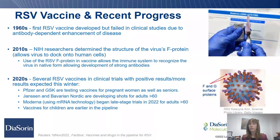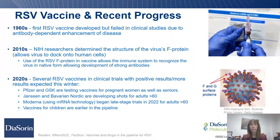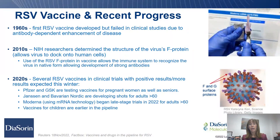A brief history of RSV vaccines: in the 1960s there was a first attempt that actually failed with enhancement of disease. In the 2010 timeframe, researchers at NIH determined the structure of RSV's two key surface proteins — the F and G proteins — allowing focused efforts on those proteins for effective vaccine strategies. In the 2020s, several RSV vaccines are in clinical trials: Pfizer and GSK testing in pregnant women and seniors, Janssen and Bavarian Nordic developing for adults over 60, and Moderna in late-stage trials for adults over 60. Vaccines for children are much earlier in the pipeline, but positive progress is happening.